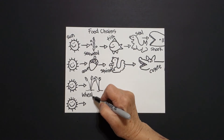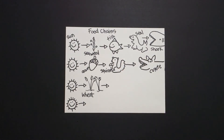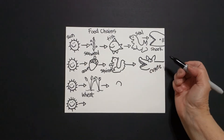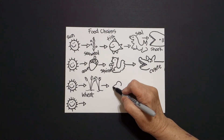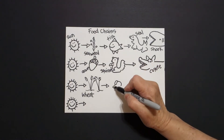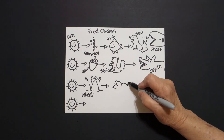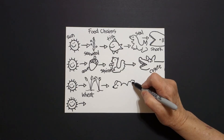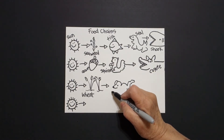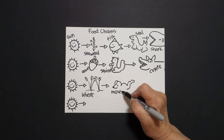A straight line and baby triangle leads from the wheat to the mouse — drawn with a big curve line, little straight lines, dots, and a wavy line. The wheat becomes part of the food chain for the mouse.